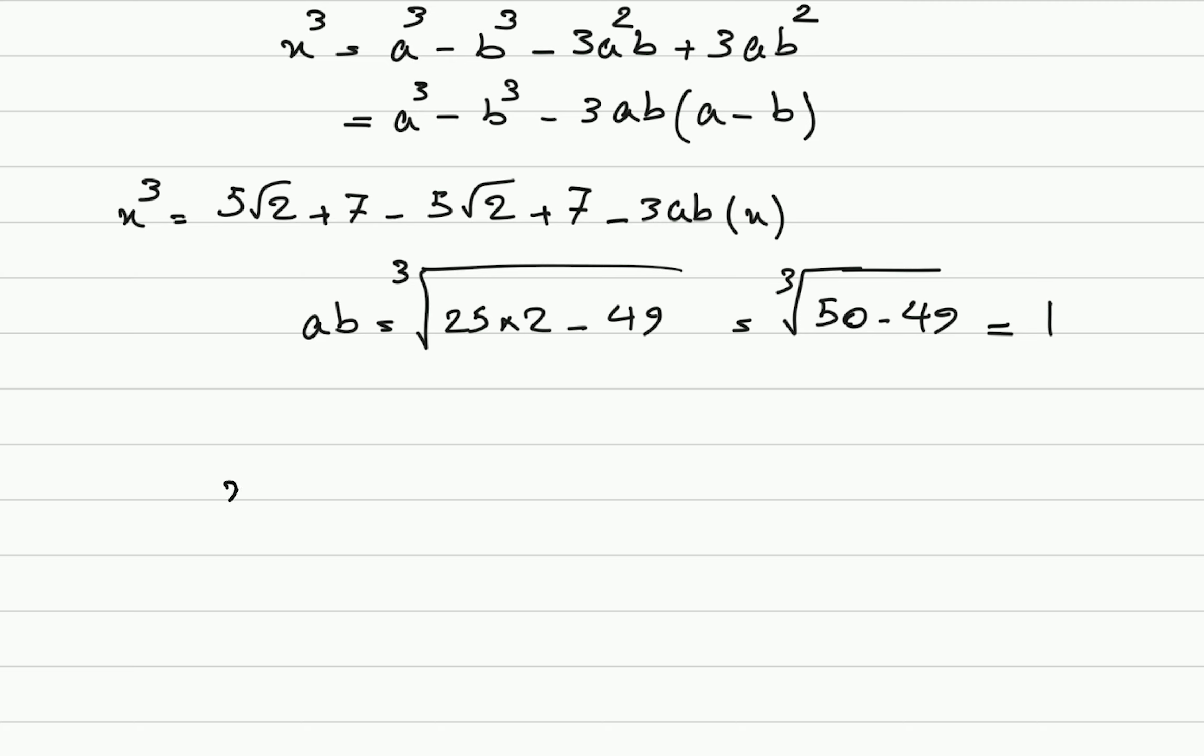Therefore, we have x cube equals, and these two terms cancel out, right? 7 plus 7 minus 3 times 1, x. So, we got ourselves a cubic equation. x cube plus 3 times x minus 14 equals 0. Let's solve this one.